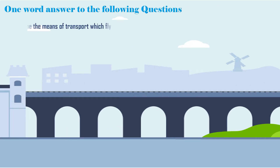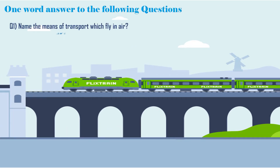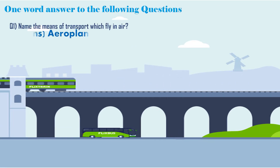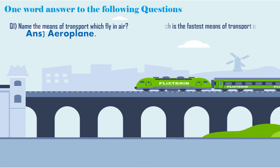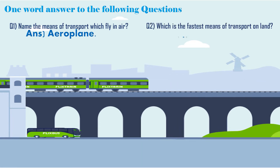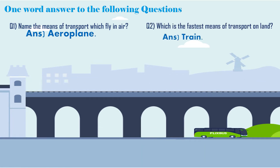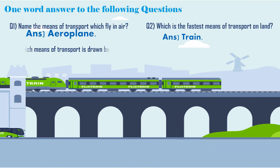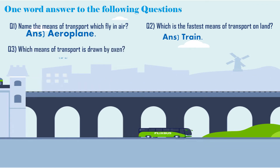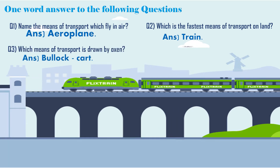Let's start giving the answers of the following. Name the means of transport which fly in the air. It's aeroplane. Which is the fastest means of transport on land? It's train.